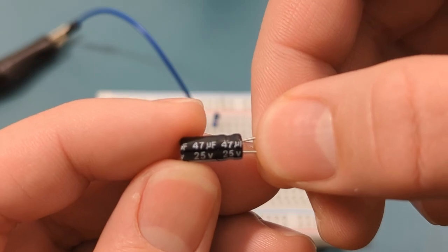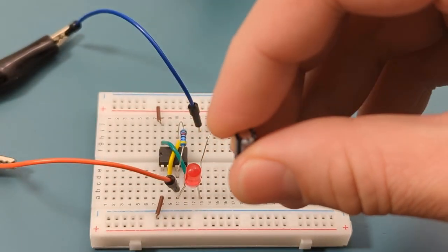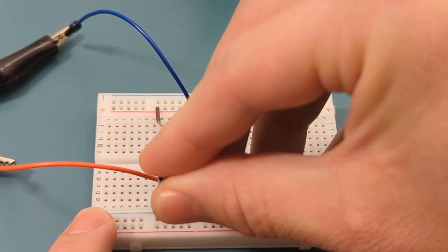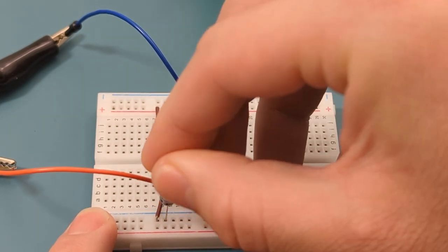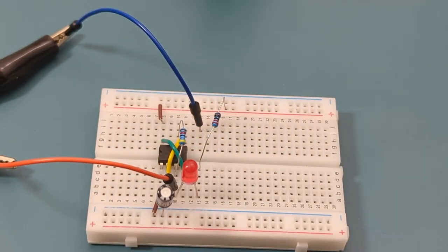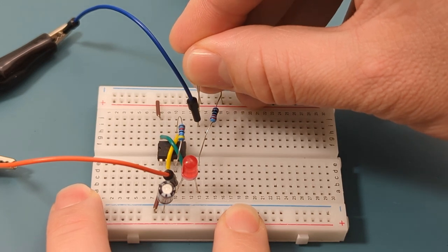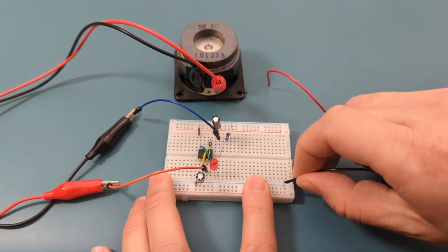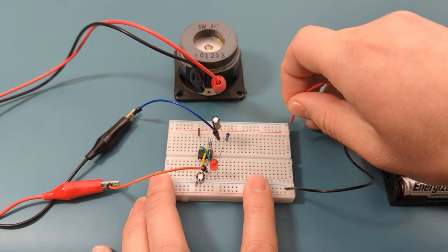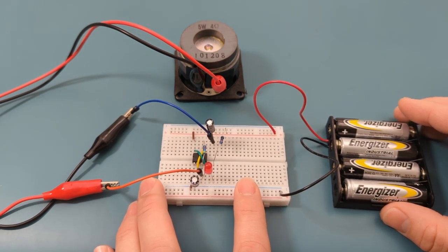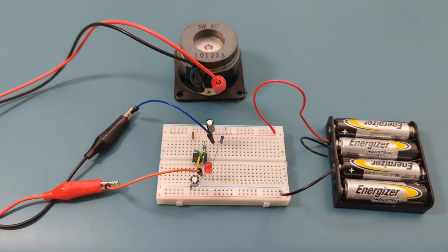Another option is to increase the capacitor value to decrease the frequency and achieve a lower-pitched sound. In this case, it's increased from 10 microfarads to 47 microfarads. As in the previous example, replace the 10 microfarad capacitors on both sides of the breadboard. You now hear a slow extended ticking sound.